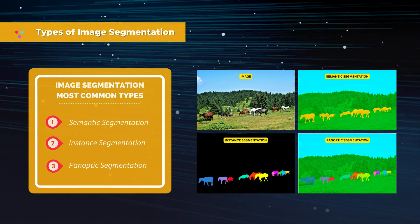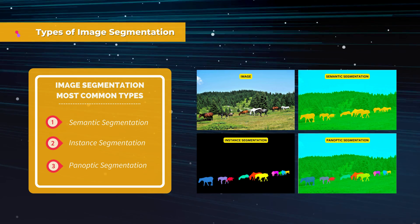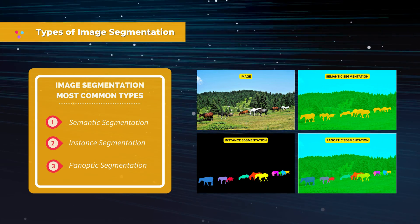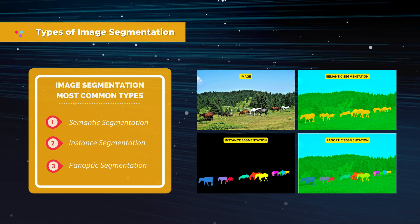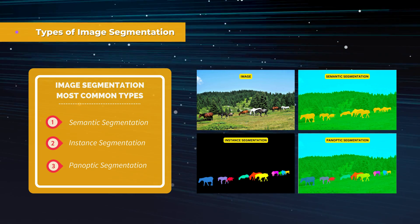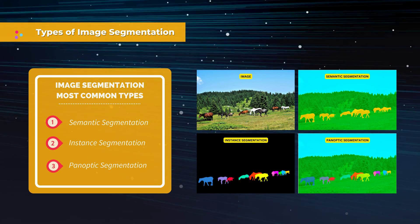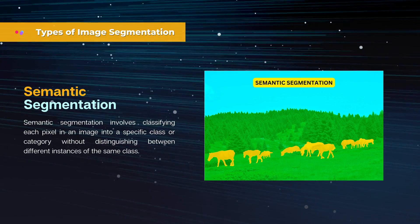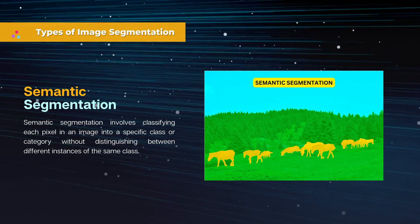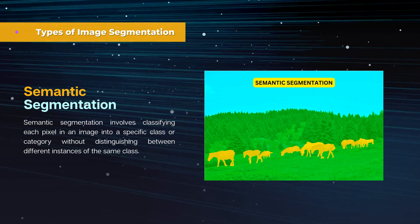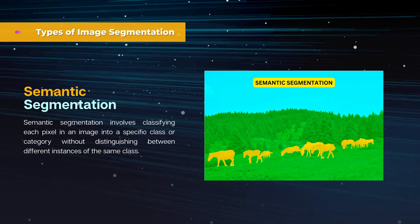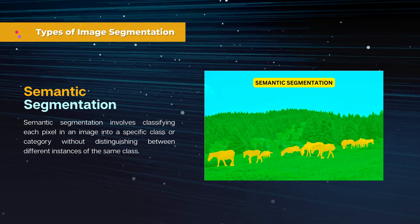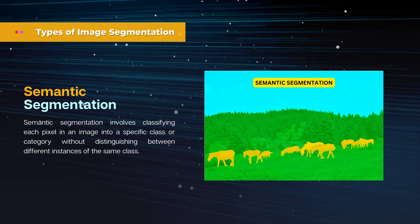Among the various image segmentation techniques, semantic segmentation, instance segmentation, and panoptic segmentation are three commonly used and important methods in computer vision. Semantic segmentation involves classifying each pixel in an image into a specific class or category, without distinguishing between different instances of the same class.